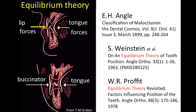Dr. Angle described in his paper in 1899 that the harmonious relations of dental arches are assisted by muscular pressure, with the tongue acting on the inside of dental arches and the lips and cheeks acting on the outside of dental arches. He stated that this should be considered a very important checkpoint for the stability of occlusion and dentition after orthodontic treatment. This idea was named the equilibrium theory by Weinstein et al.